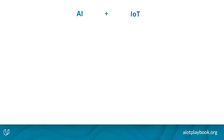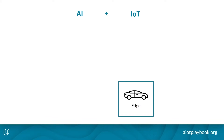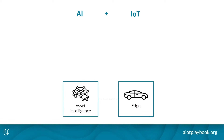AI and IoT combined starts with the physical product or the asset at the edge. What we can do here is apply asset intelligence to it — this is AI deployed at the edge, directly on board the asset or close to it, which helps make the asset itself more intelligent. Now, that in itself is not yet an IoT use case because it's not connected.